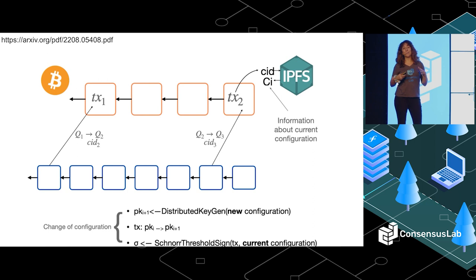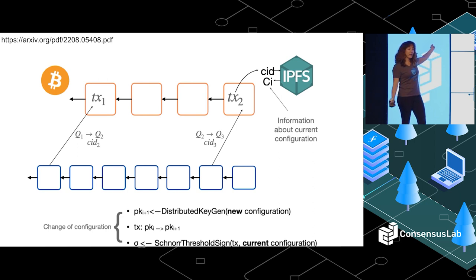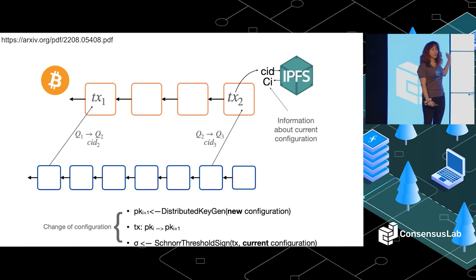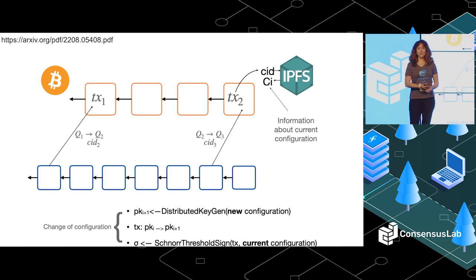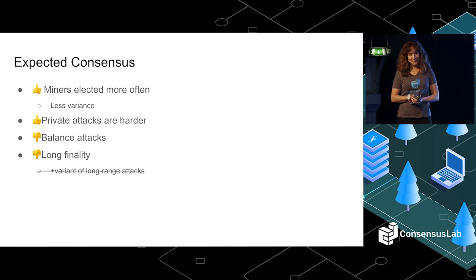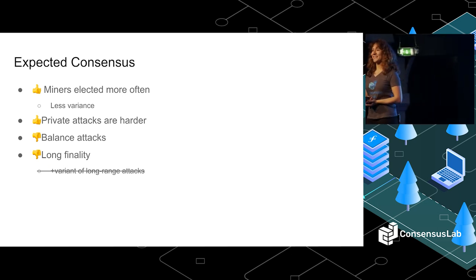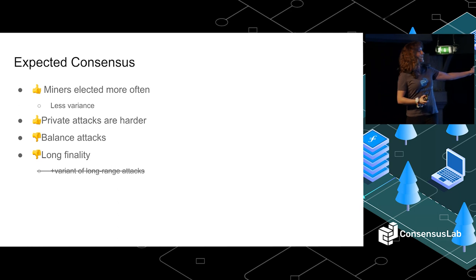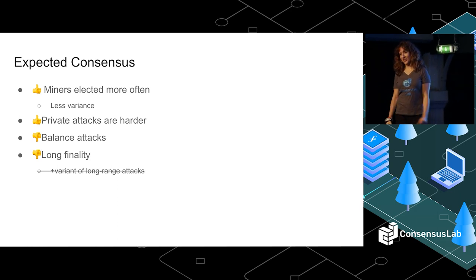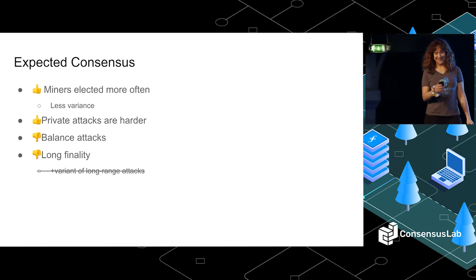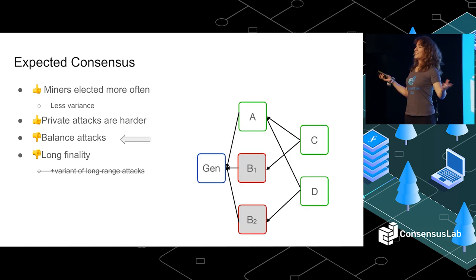I'm not going to go into more details, but please check the paper — it is on the archive. I'm also going to present it at Consensus Day in two weeks' time. This piece of research done with Marco basically deals with long-range attacks — one problem solved. Now what about the next problem? Balance attacks.